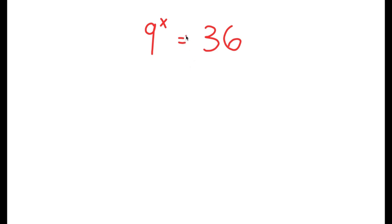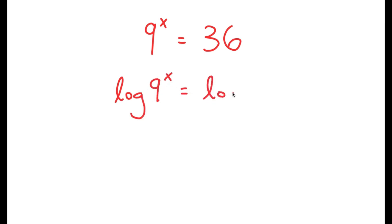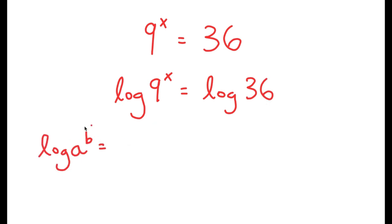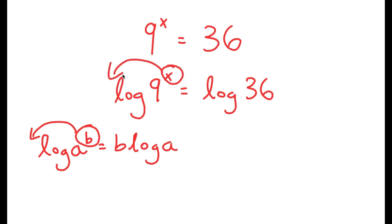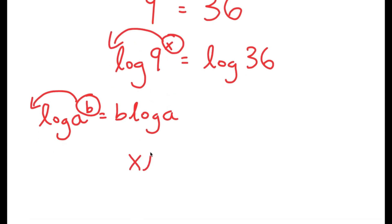To solve this equation, I'm going to first start by taking the log on both sides. So I get log of 9 to the power of x is equal to log of 36. Now, if I have something in the form log a to the power of b, I can move this exponent of b to the front — this turns into b times log a. So I get x times log 9 is equal to log 36.